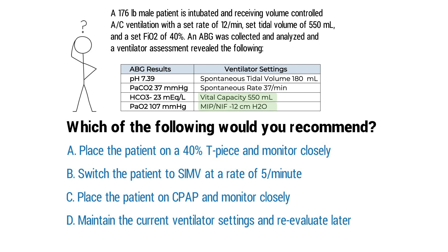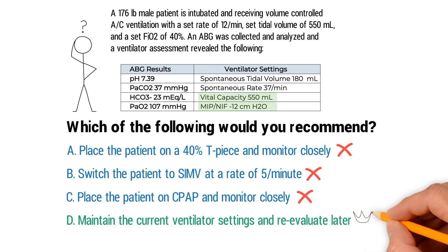Since the patient is not ready for weaning, it's best to maintain the current settings and reevaluate at a later time. All of the other answer choices — T-piece, SIMV, and CPAP — are methods used to wean the patient from the ventilator. Looking at all the data, this patient clearly is not ready for that yet, so you can rule them all out. That only leaves one option, confirming that the correct answer is D: maintain the current ventilator settings and reevaluate later.